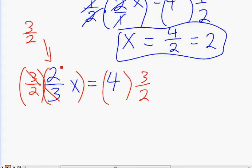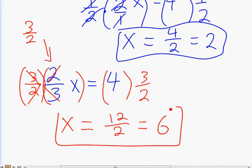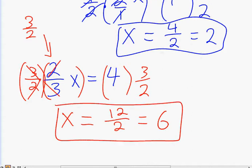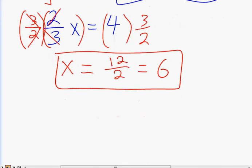And let's see what we get. 3 and 3 is going to cancel, 2 and 2 is going to cancel. We're left with x on the left side. On the right side, what we have is 4 times 3, which is 12, over 2. And 12 over 2 is the same as 6. And that's your answer, 6. Let's try one more of these.